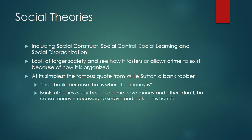Social theories are numerous and I don't have time to cover all of them, but basically they include questions like: how is society constructed? How are controls set up? How can people achieve success or suffer from failure? How can people learn or not learn to behave? What is their environment like — is it disorganized or promoting criminal behavior, or is it prohibiting it? Social theories tend to look at larger society and see how it fosters or allows crime to exist.